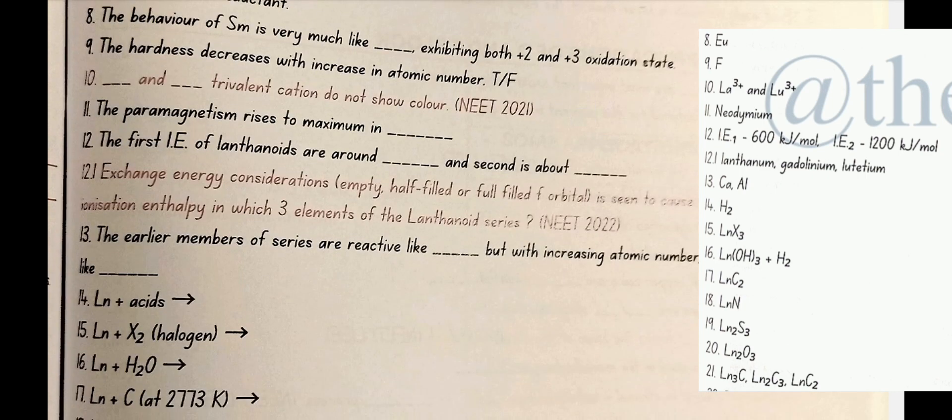The hardness decreases with increase in atomic number. No false. La3 plus and Lu3 plus trivalent cation do not show color. The paramagnetism rises to maximum in neodymium. The first IE of lanthanoids are around 600 kilojoule per mole and second is about 1200 kilojoule per mole. Exchange energy considerations: empty half filled or fulfilled f orbital is seen to cause low value of third ionization enthalpy in lanthanum gadolinium and lutetium.